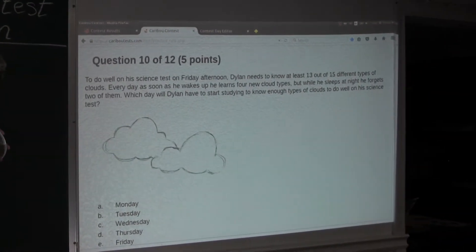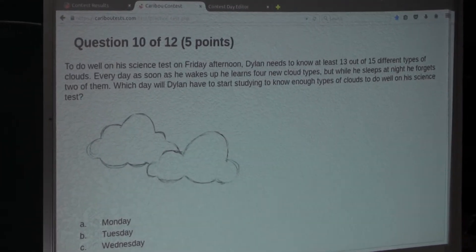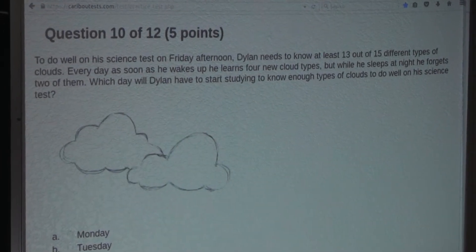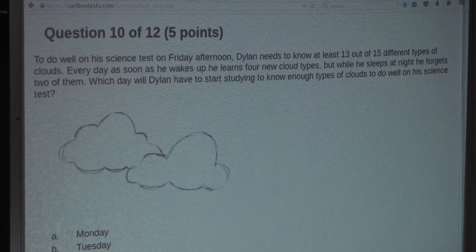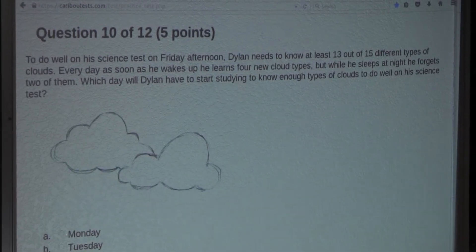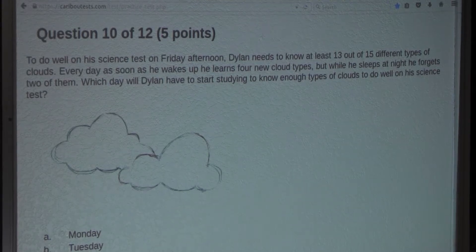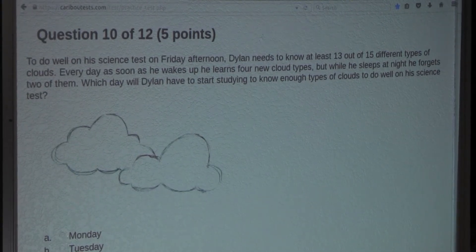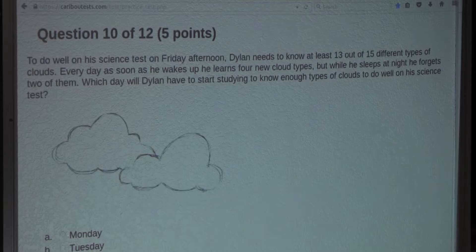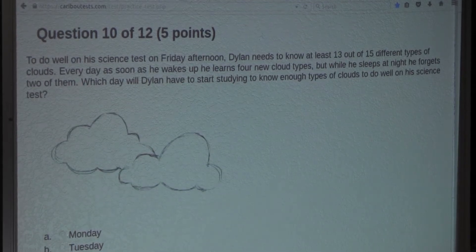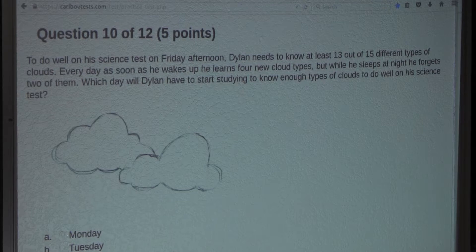So the question is, to do well on a science test on Friday afternoon, Dylan needs to know at least 13 out of 15 different types of clouds. Every day as soon as he wakes up he learns 4 new cloud types. But while he sleeps at night, he forgets 2 of them. Which day will Dylan have to start studying to know enough types of clouds to do well on his science test?